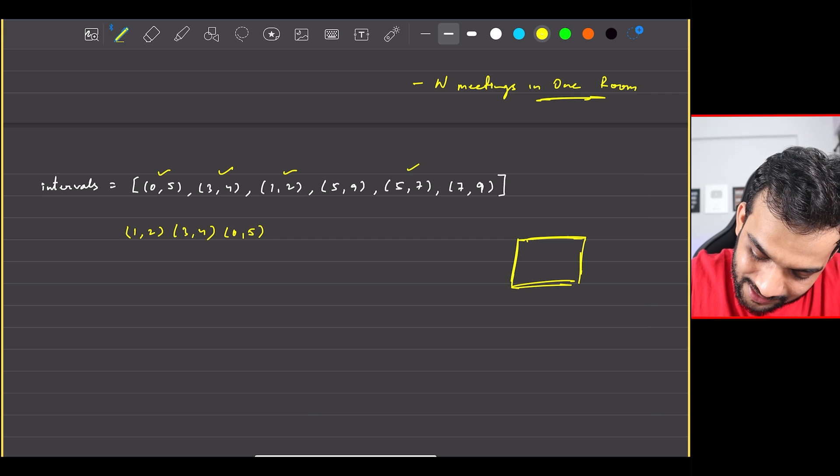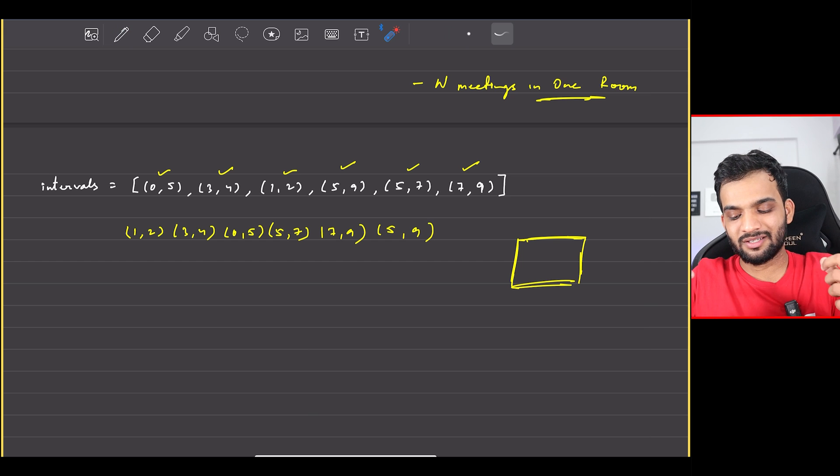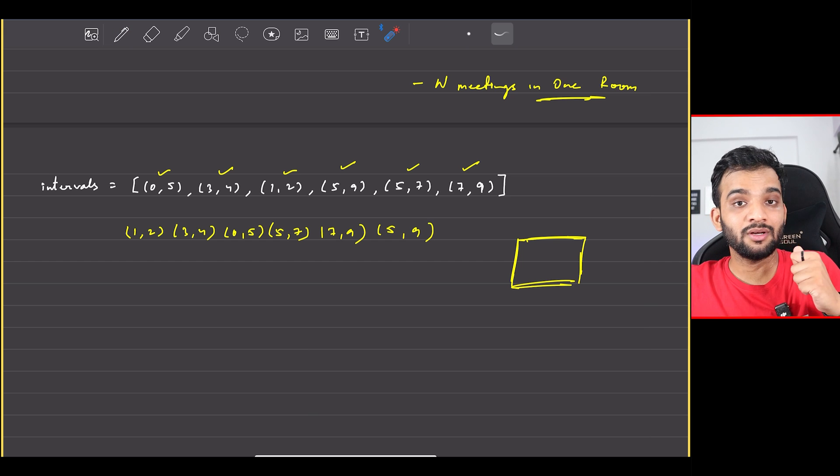Then there is a (0,5) which is this, then there's a (5,7) which is this, then there's a (7,9) which is this, and then there's a (5,9). So what I did was I arranged them in the order of the ending time, in the order of the ending time, right? Perfect.